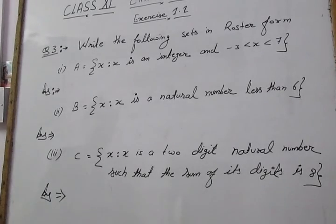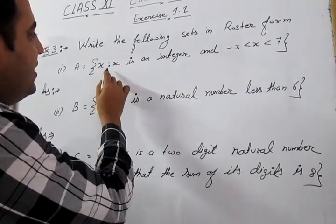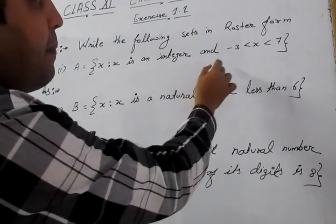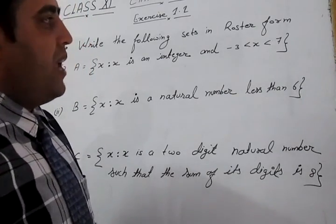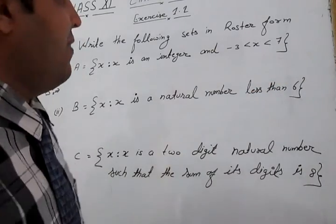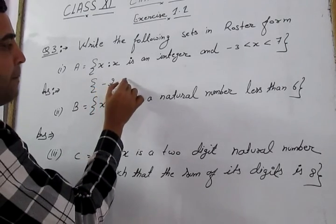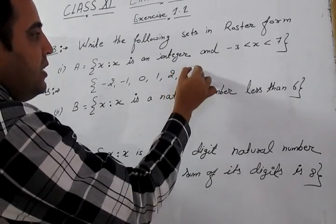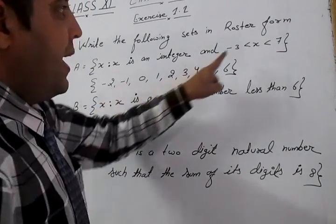Question 3: Write the following sets in roster form. Part A: set A = {x : x is an integer and −3 < x < 7}. We need to find integers greater than −3 and less than 7. Those integers are −2, −1, 0, 1, 2, 3, 4, 5, 6 — all values greater than −3 and less than 7.